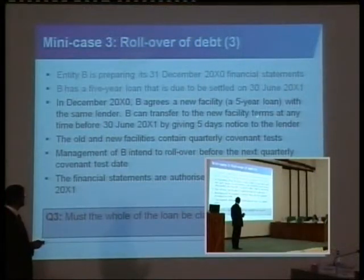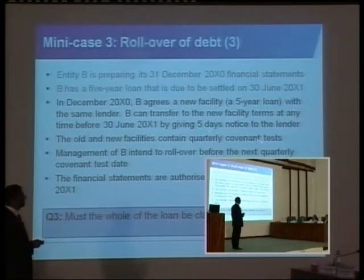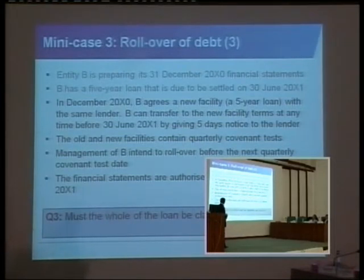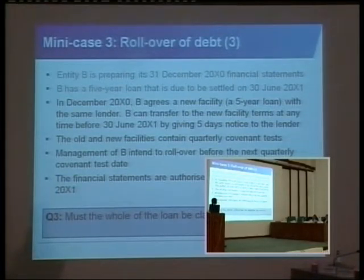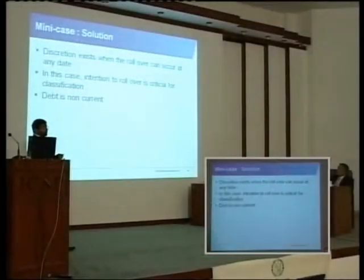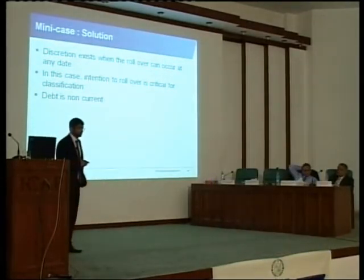With the same lender, B can transfer to the new facility terms at any time before 30th June by giving five days notice. The old and new facilities contain quarterly covenant tests. Management of B intend to roll over before the next covenant test. Financial statements are authorized for issue on 1st March. Discretion exists when the rollover can occur, and the intention is to roll over. The debt is non-current.